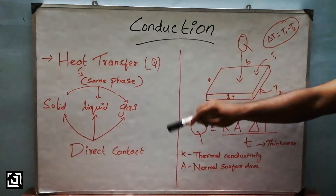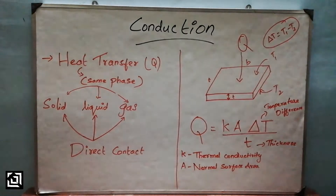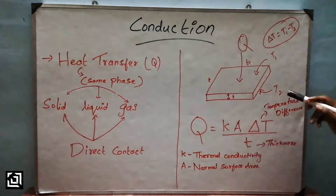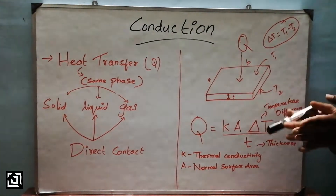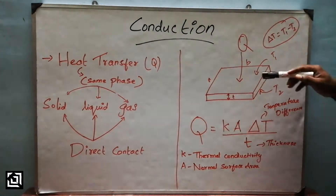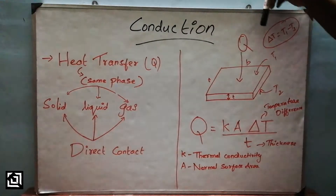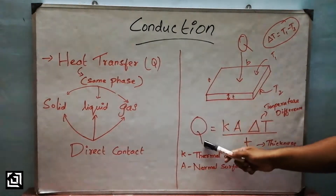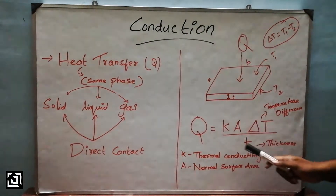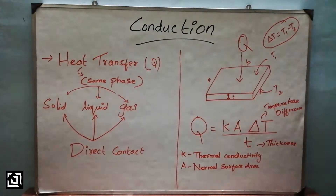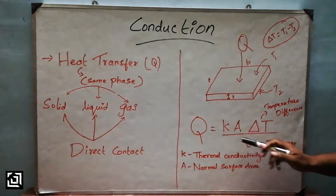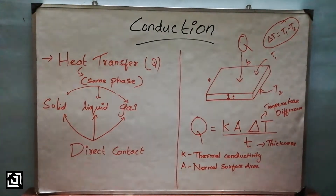In a practical example, the top surface has high temperature T1 and the bottom surface has low temperature T2. Heat transfer always occurs from high to low temperature, so heat flows from top to bottom. The heat conduction formula is: q = K·A·ΔT / t, where t is the thickness. Heat transfer is directly proportional to K, A, and ΔT, and inversely proportional to thickness t.